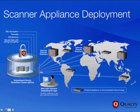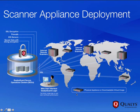Along with those external scanners, we have internal scanner appliances. We can use internal scanner appliances to scan our internal or private IP addressing — those IP addresses that are in the RFC 1918 space, or ones that are not accessible from the public internet. We'll need to install that scanner appliance in our network in order to scan those private IPs. These internal scanner appliances come in both a hardware and virtual appliance.